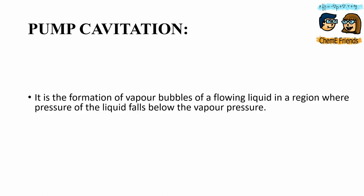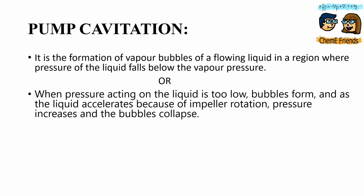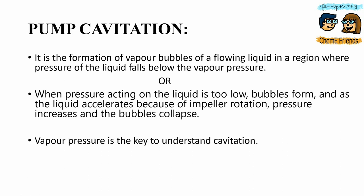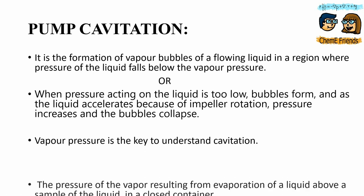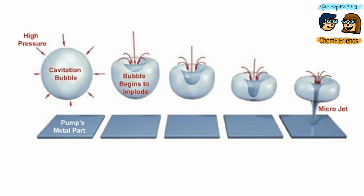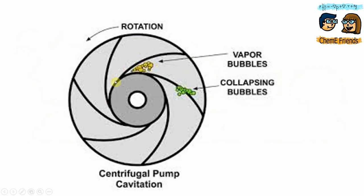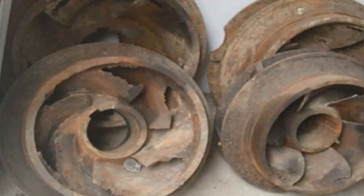At pump cavitation — the general definition says it is the formation of vapor bubbles of a flowing liquid in a region where the pressure of the liquid falls below the vapor pressure. The key word here is vapor pressure. It is the pressure resulting from the evaporation of liquid above the sample of liquid in a closed container. Consider a scenario where the temperature is high enough that it causes flashing of liquid because the pressure falls below the vapor pressure of liquid. The bubbles form at the impeller eye and are carried along the impeller vane. As they are carried along, the bubbles start bursting, and this continuous bursting causes erosion of the pump and impacts efficiency. This picture is for your reference to understand how pump cavitation destroys the pump.